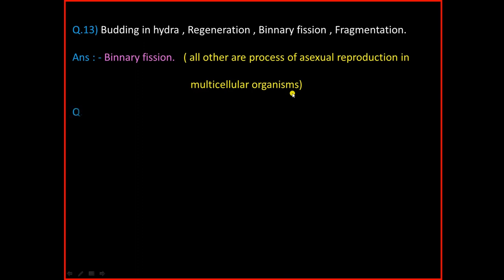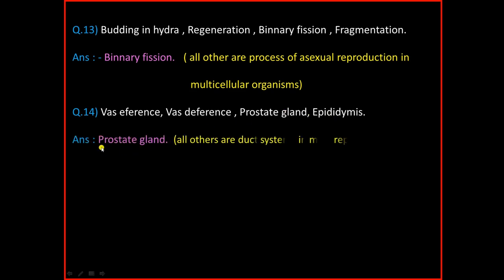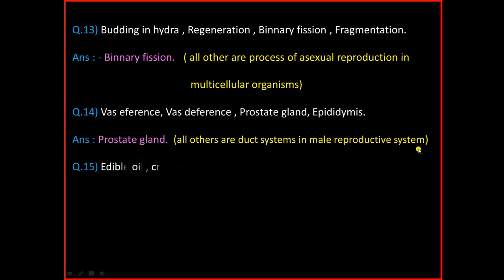Question Number 14: Vas Efferens, Vas Deferens, Prostate Gland, Epididymis. And the answer is Prostate Gland. The reason is all others are part of the duct system in the male reproductive system.